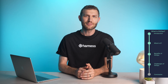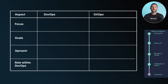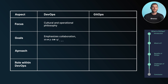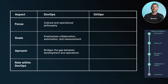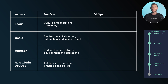GitOps and DevOps share common goals but have distinct focuses. DevOps is a culture and operational philosophy that emphasizes collaboration, automation, and measurement. It bridges the gap between development and operations teams, promoting shared responsibility and continuous improvement.